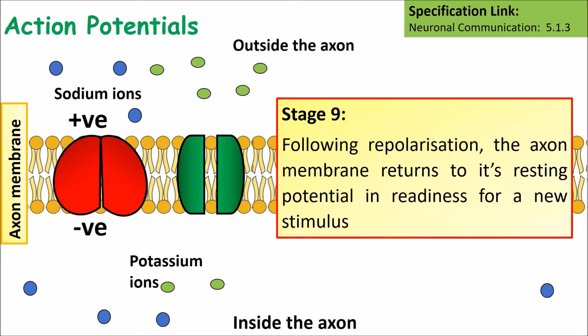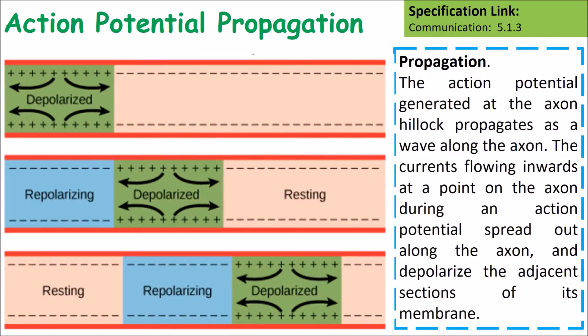Following repolarization, the axon membrane returns back to its resting state in readiness for a new stimulus. The propagation of an action potential is as follows: the action potential generated at the axon hillock, which means the start, propagates as a wave along the axon. The current flowing inwards at the point of the axon during an action potential spreads out along the axon and depolarizes the adjacent sections of its membrane. The diagram on the left-hand side shows how depolarization followed by repolarization followed by return to resting state occurs.